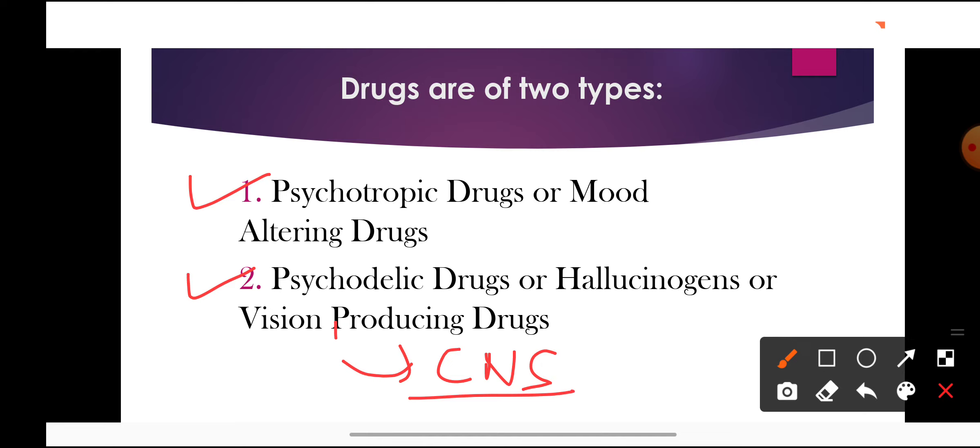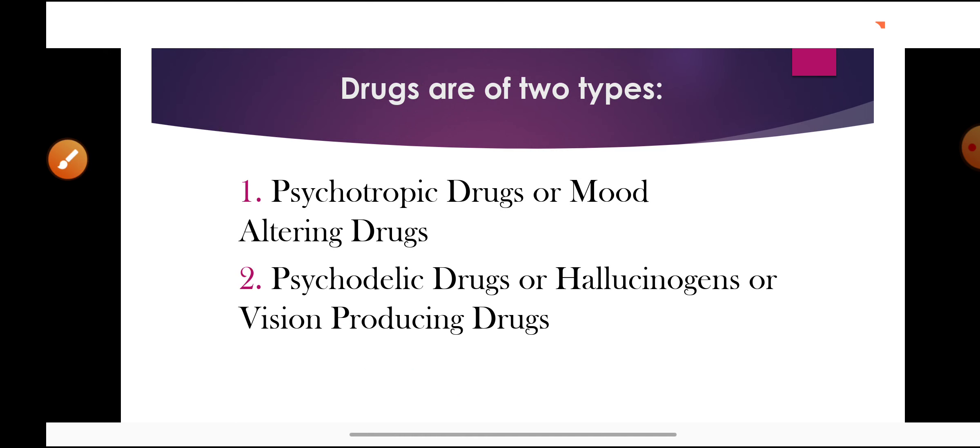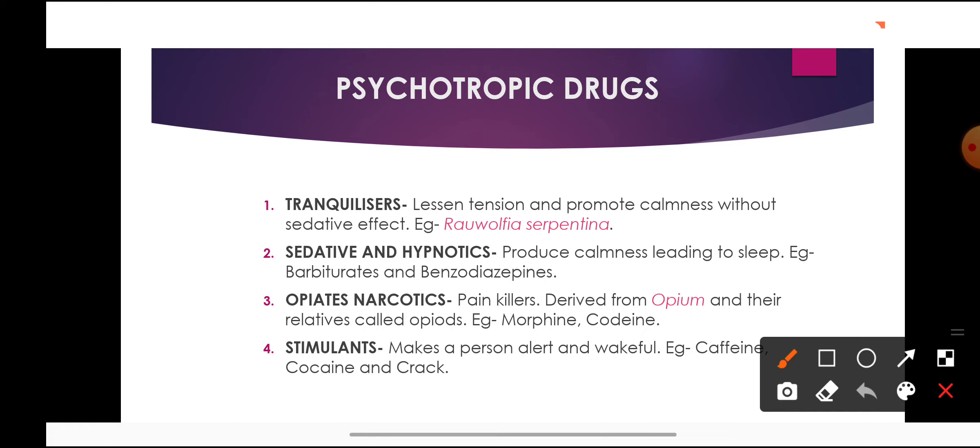The other type is psychedelic drugs, also called hallucinogens or vision-producing drugs. These affect our natural nervous system and can change our thoughts and feelings. They produce auditory hallucinations — sounds are heard and perceptions of external objects occur that others cannot see or hear. These are known as hallucinogens or psychedelic drugs that produce illusions, which is why they are called vision-producing drugs.